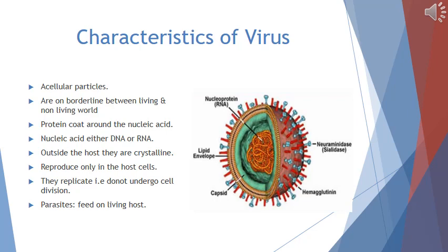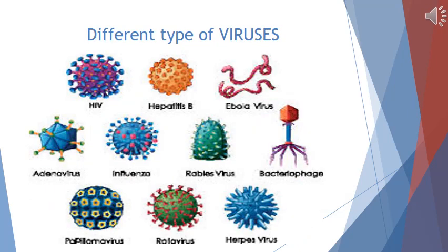Outside the host, viruses are crystalline in structure and they reproduce only inside their host — they replicate but do not undergo cell division. They are parasites that feed on a living host and are not present in a dead body. Different types of viruses include HIV, hepatitis virus, bacteriophage, and influenza viruses. Remember that viruses are parasites, so they always cause diseases in human beings, animals, and plants.